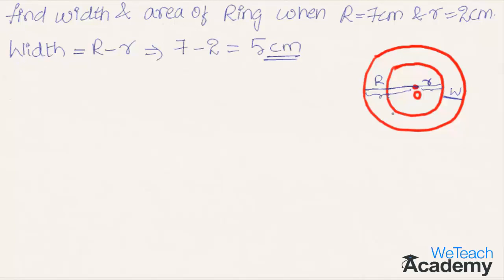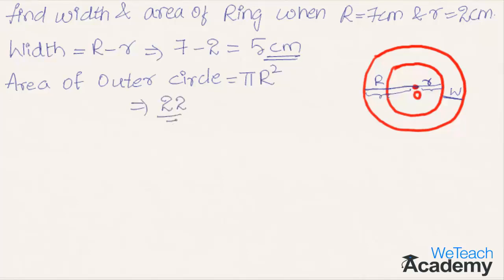Now let us find the area of the outer circle. The area of the outer circle is given by π·R², where R is the radius of the outer circle. Substituting capital R equals 7, we get (22/7) × 7 × 7. Simplifying, 7 cancels once, giving 22 × 7, which equals 154 cm².